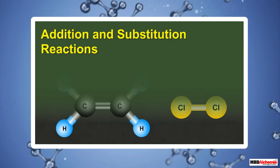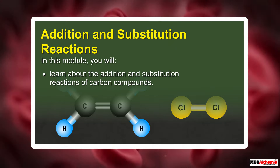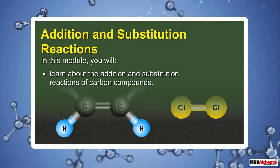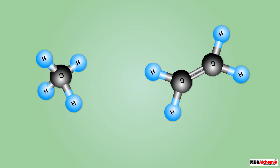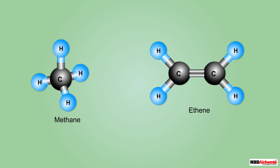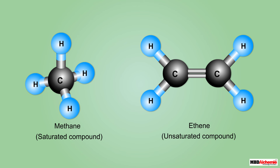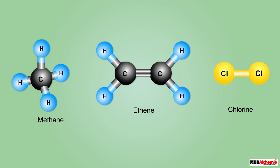In this module, you will learn about the addition and substitution reactions of carbon compounds. Shown here are the molecules of two carbon compounds: methane and ethene. As you already know, methane is the simplest saturated carbon compound, whereas ethene is the simplest unsaturated carbon compound, having a carbon-carbon double bond.